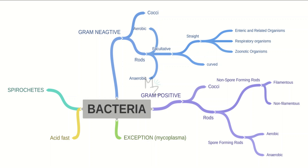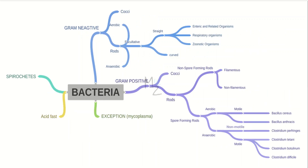Non-spore-forming are subdivided into filamentous and non-filamentous. We are concerned with spore-forming, which is further classified into aerobic — for example, Bacillus — and anaerobic — for example, Clostridium. Both are further classified into motile and non-motile. For anaerobic, the non-motile one is Clostridium perfringens, and the motile ones are Clostridium tetani, botulinum, and difficile.